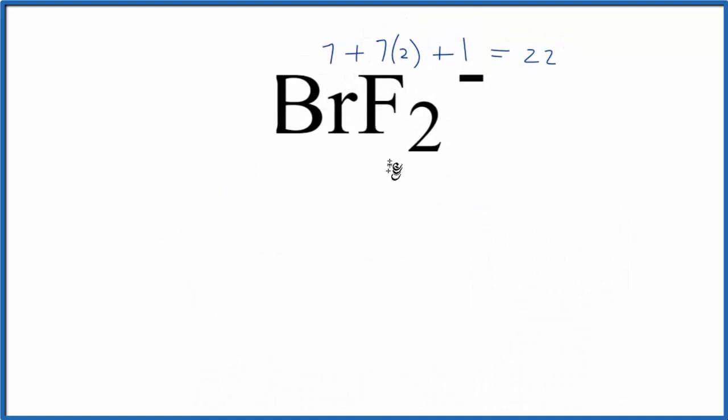Bromine is less electronegative than fluorine, so we'll put the bromine in the center of our Lewis structure and put the fluorine atoms on either side.